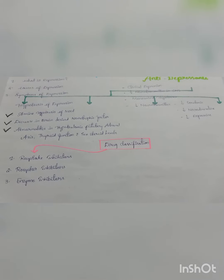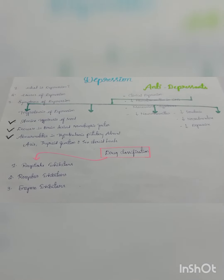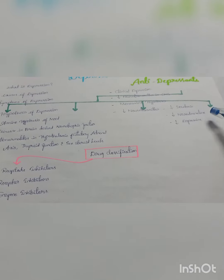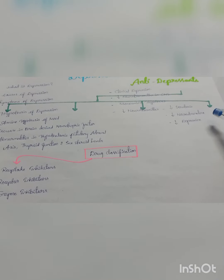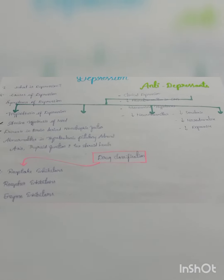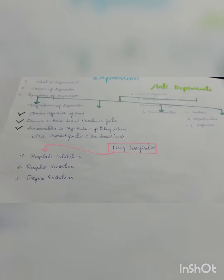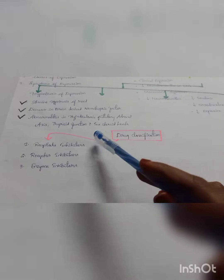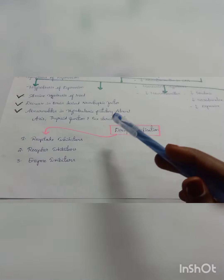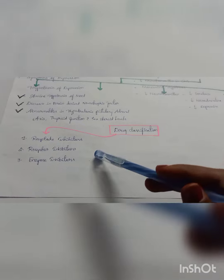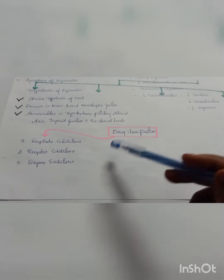The goal is to increase the level of monoamines such as serotonin, noradrenaline, and dopamine. The antidepressants are divided into three classes: reuptake inhibitors, receptor inhibitors, and enzyme inhibitors.